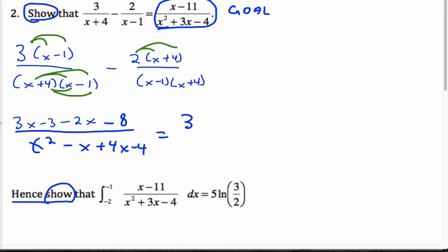3x minus 2x is x, minus 3 subtract 8 is minus 11. So that looks good. Collecting our like terms, x squared plus 3x minus 4. Good.